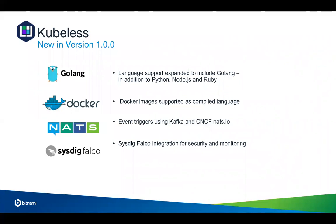At KubeCon we also demoed an integration with Falco from Sysdig. Falco is an open source security alerting solution — you run it as a DaemonSet in your Kubernetes clusters and write security rules using their YAML-like syntax. When Falco detects something, it publishes a message to NATS, which can then call a function. The demo we did with Sysdig had a rule monitoring your Kubernetes cluster for possible Bitcoin miners — looking at process types and ports used — and when a rogue Bitcoin miner was detected, it called a function that killed the offending pod.